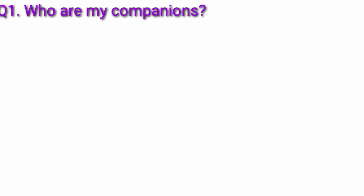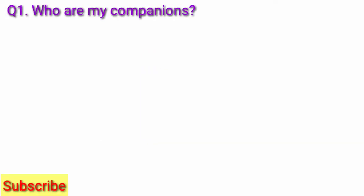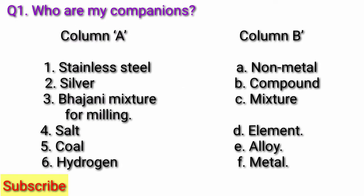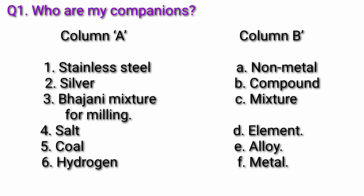Question 1: Who are my companions? Column A. First: stainless steel. Second: silver. Third: bhajni mixture for milling. Fourth: salt. Fifth: coal. Sixth: hydrogen.